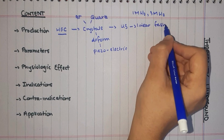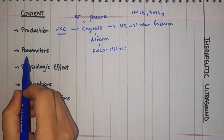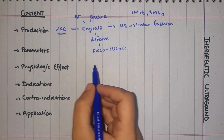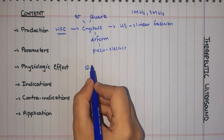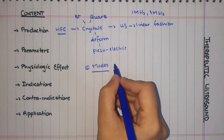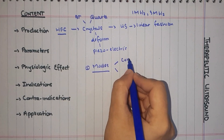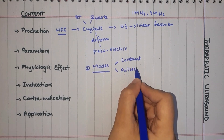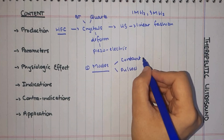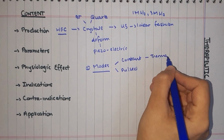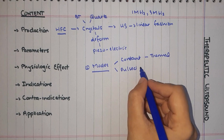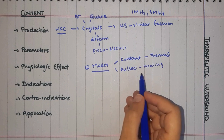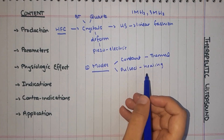Now we discuss the ultrasound parameters one by one. The first parameter is types and modes. We have two modes available: constant and pulse. If we use constant mode, we get a thermal effect. If we use pulse mode, we get a tissue healing effect.